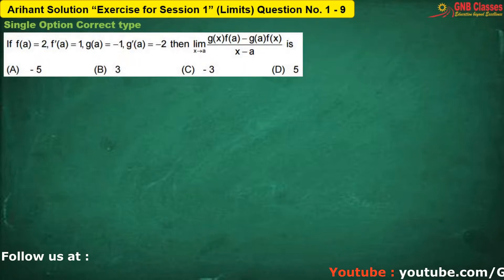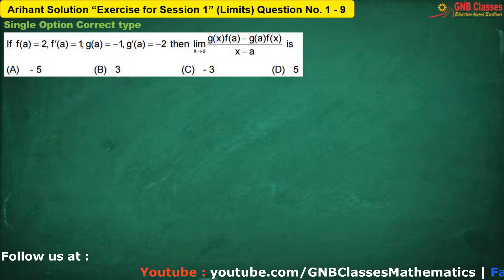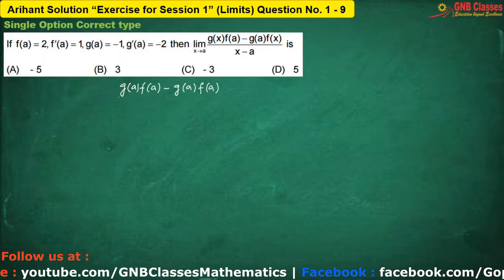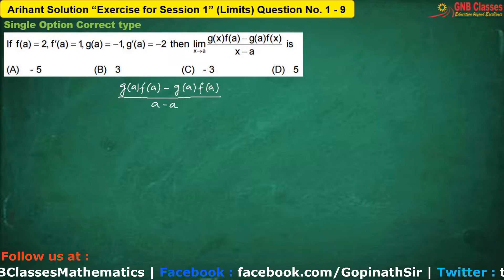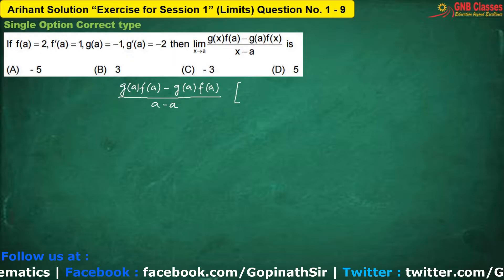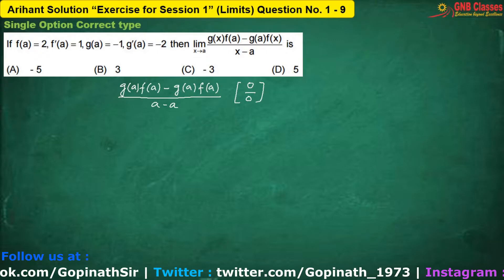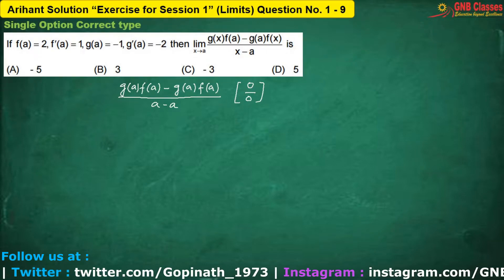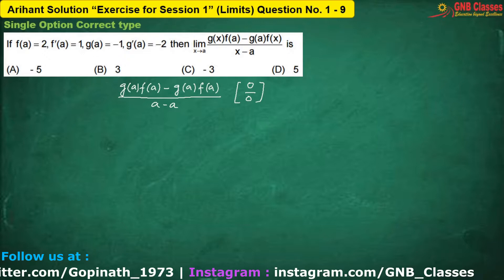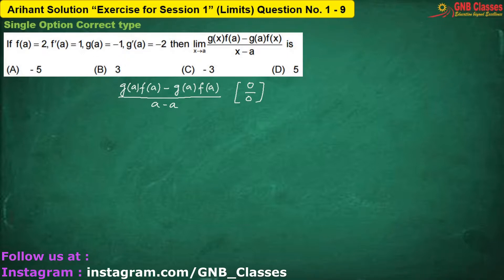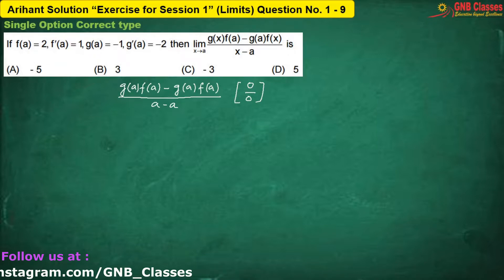In this problem, if I put the limiting value in the given function, we are getting 0 in the numerator and 0 in the denominator, so the limiting form of the given limit is 0 by 0. We know that when the limiting form of any limit is 0 by 0 or infinity by infinity, we apply L'Hôpital's rule — differentiating numerator and denominator separately.